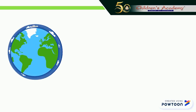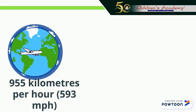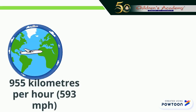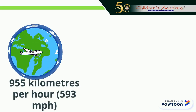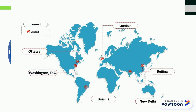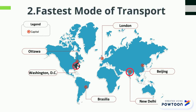Commercial jets reach a speed of 955 kilometers per hour. That means a flight can cover the distance from India to Washington DC — that is about more than 12,000 kilometers — in merely 17 hours. Hence the second advantage: it is the fastest mode of transport.